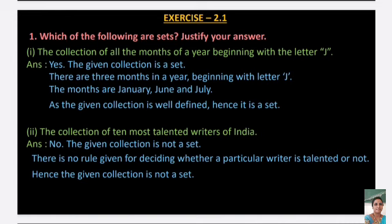Exercise 2.1, Question 1: Which of the following are sets? Justify your answer. First one: the collection of all the months of a year beginning with the letter J. The answer is yes, it is a set. There are three months beginning with letter J — January, June, and July — so the given collection is well defined, hence it is a set.